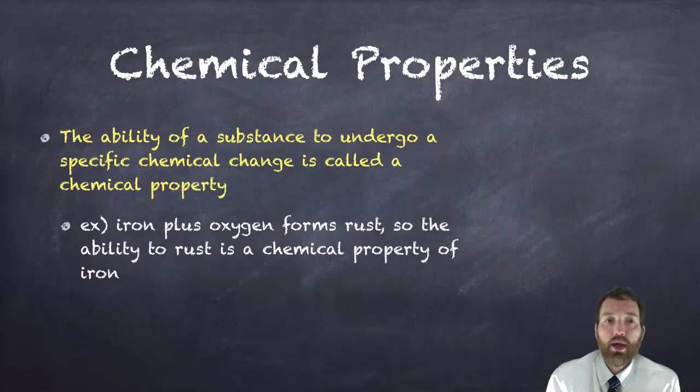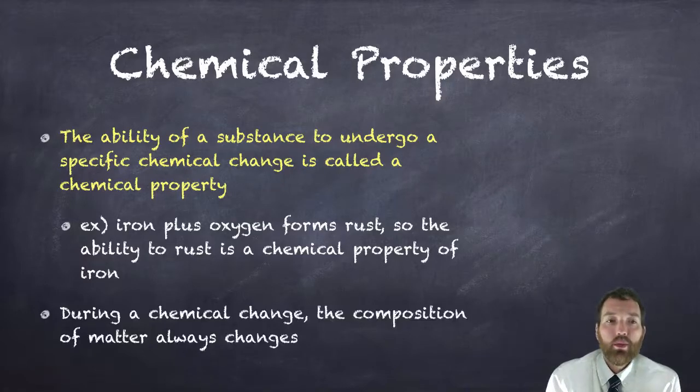For example, iron plus oxygen forms rust, so the ability to rust is a chemical property of iron. When you have a chemical change, the composition of matter always changes. When we're done rusting the iron, it's no longer iron anymore, it's iron oxide, which is very brittle and not as strong as iron once was. So the composition changed. That's how I know that was a chemical reaction that happened.